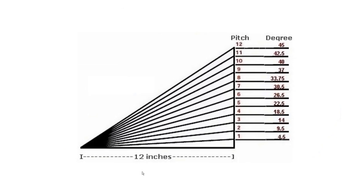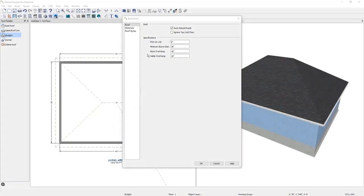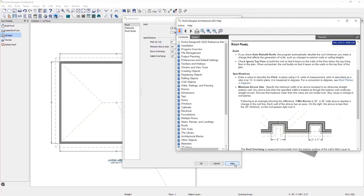To better understand pitch, here is a simple pitch chart. This shows your run from left to right — in this example, 12 inches. You can see that as we rise every inch, the pitch angle becomes steeper and steeper. The same concept applies to the software: the greater the value plugged into the pitch, the steeper the roof will be. Next, we have the eave and gable overhang. The eave overhang is how much the roof will overhang the walls, and the gable overhang is how far the roof will overhang on the gable walls.